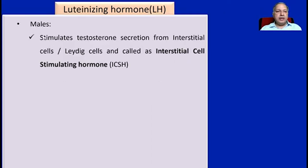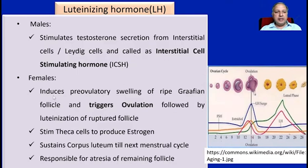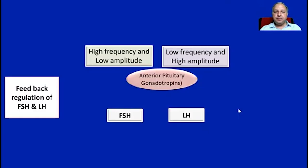Regarding luteinizing hormone: in males, it stimulates testosterone secretion from the interstitial cells or Leydig cells, and is therefore called interstitial cell stimulating hormone or ICSH. In females, it induces pre-ovulatory swelling of the ripe Graafian follicle and triggers ovulation, followed by luteinization of the ruptured follicle. The LH surge occurs nearly 36 hours before ovulation. It stimulates theca cells to produce estrogen, sustains the corpus luteum until the next menstrual cycle, and is responsible for the atresia of the remaining follicles.